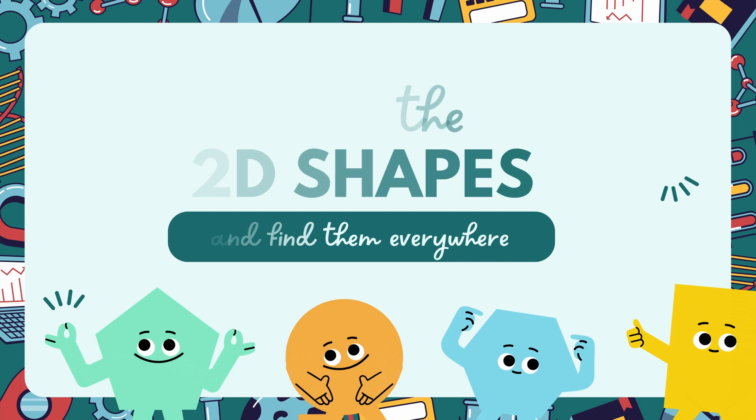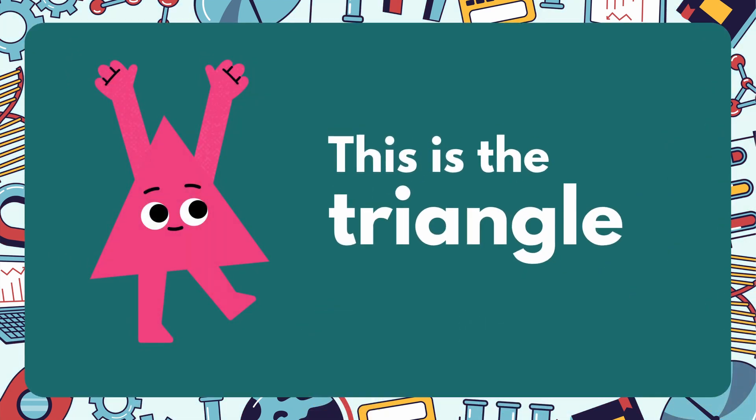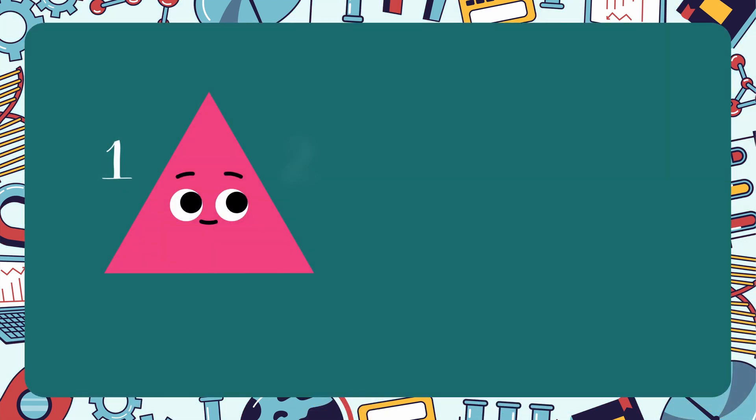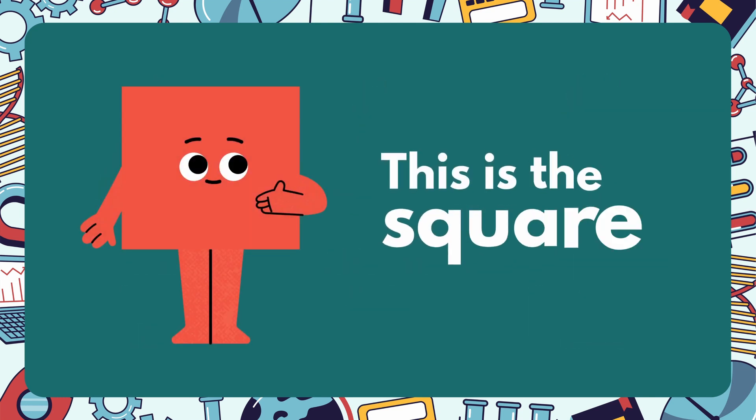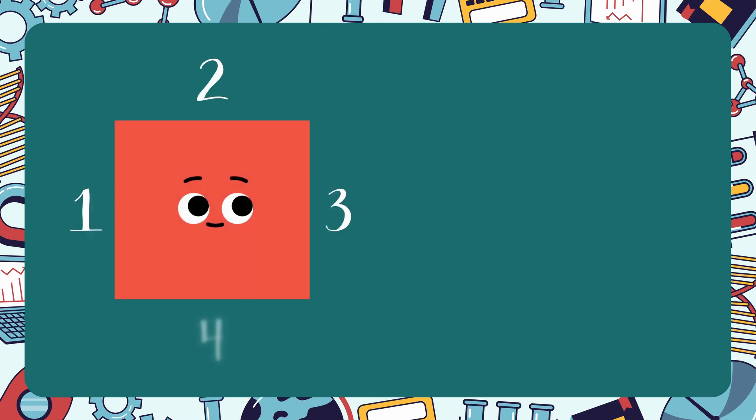This is a triangle: one, two, three. It has three sides. It is like a watermelon slice, it is like a hat, it is like an ice cream cone. This is the square: one, two, three, four.